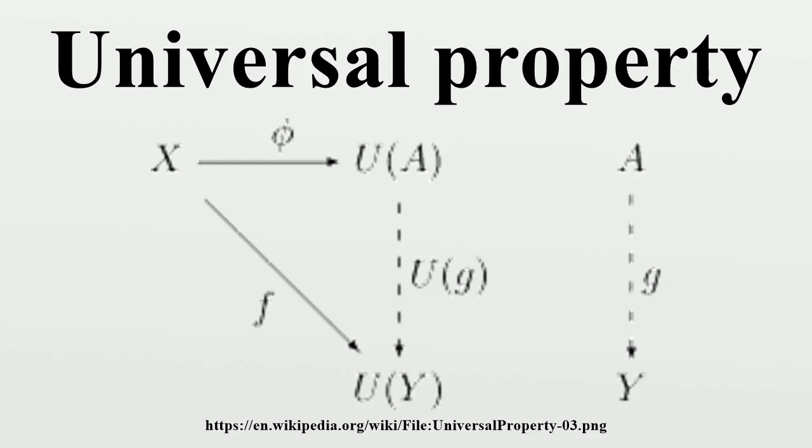If (A', φ') is another such pair, then there exists a unique isomorphism k: A→A' such that φ' = U(k)∘φ. This is easily seen by substituting (A', φ') for (Y, f) in the definition of the initial property. It is the pair (A, φ) which is essentially unique in this fashion. The object A itself is only unique up to isomorphism. Indeed, if (A, φ) is an initial morphism and k: A→A' is any isomorphism then the pair (A', φ'), where φ' = U(k)∘φ, is also an initial morphism.